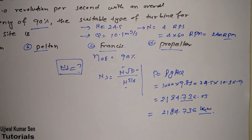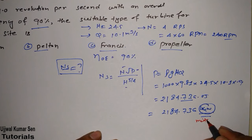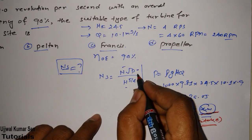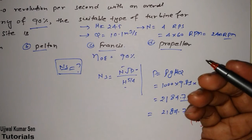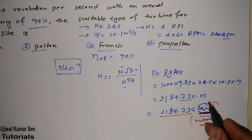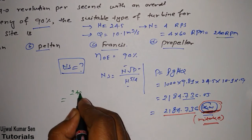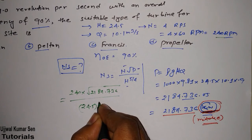One important note: when calculating specific speed for a turbine, the power P in the formula must be in kilowatts. Do not convert kilowatts to watts by multiplying by 10³ — that will give the wrong answer. Keep the power value in kilowatts as calculated. So we will use P = 2184.736 kW directly in the Ns formula.